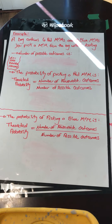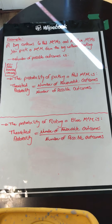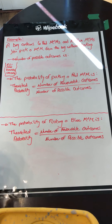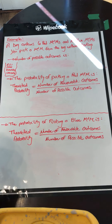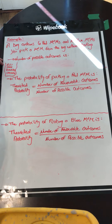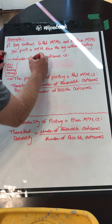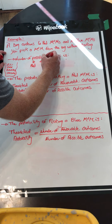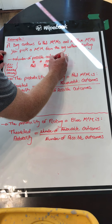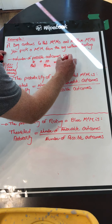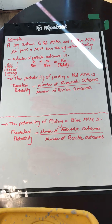Let's work through an example for probability range. There is a bag that contains 6 red M&Ms and 10 blue M&Ms, and you pick an M&M from the bag without looking. Before we get started, it is really important in probability to be able to visualize what's actually happening, so I really encourage you to sketch things out. I've sketched the bag here — 6 Rs for the 6 red M&Ms and 10 blues for the 10 blue M&Ms. So the number of possible outcomes is 16, often referred to as the total, and it's important to know what the total is.